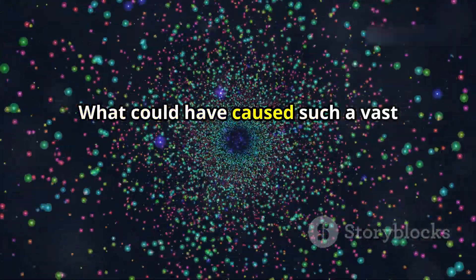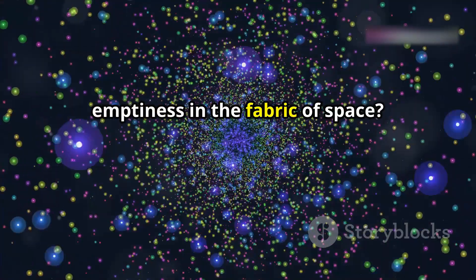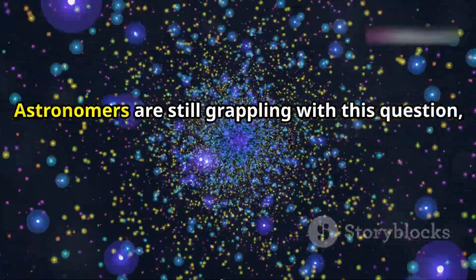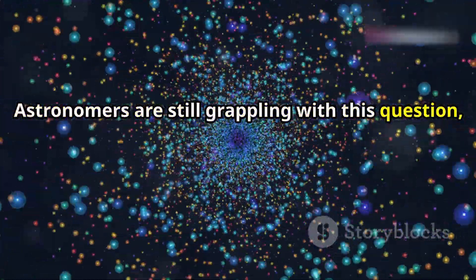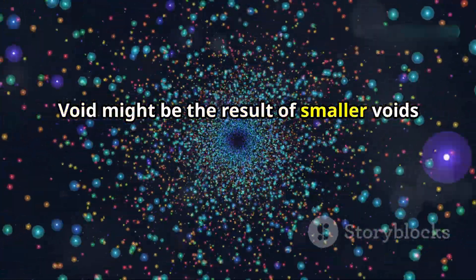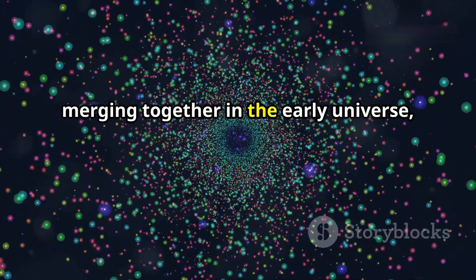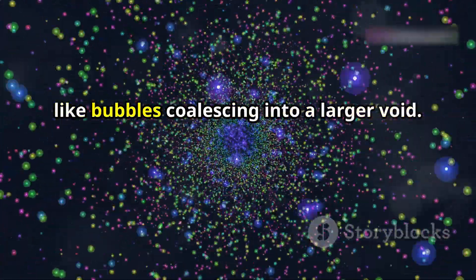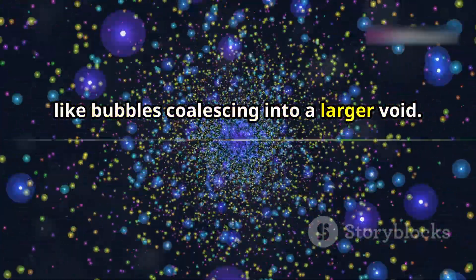What could have caused such a vast emptiness in the fabric of space? Astronomers are still grappling with this question, but some theories suggest that the Boötes Void might be the result of smaller voids merging together in the early universe, like bubbles coalescing into a larger void.